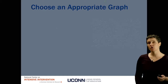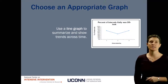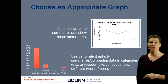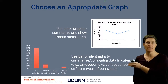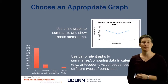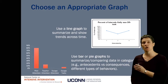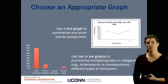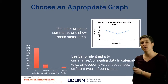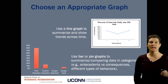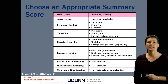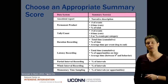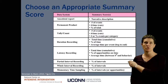We're going to think about which graph you might choose based on what you're trying to summarize. Use a line graph if you're trying to show changes in behavior across time. Use a bar graph or a circle graph if you're trying to show behaviors that fall into categories — for example, summarizing the percent of antecedent or consequence events from ABC data. This quick summary chart gives you information about how to summarize based on the type of measurement system you chose.